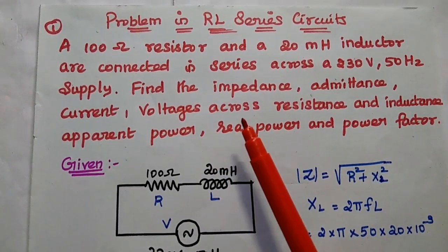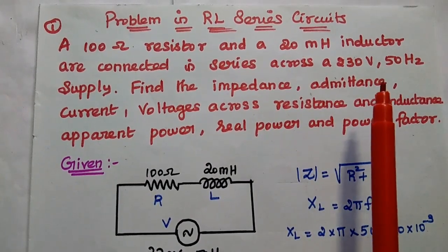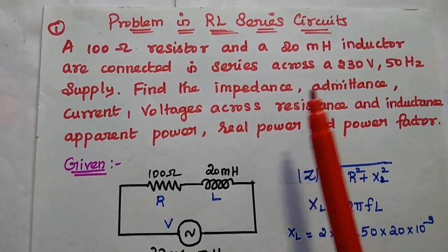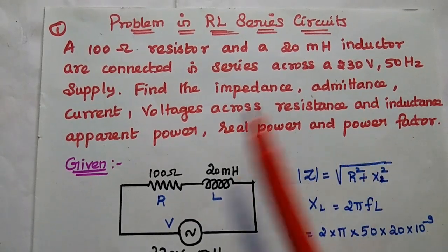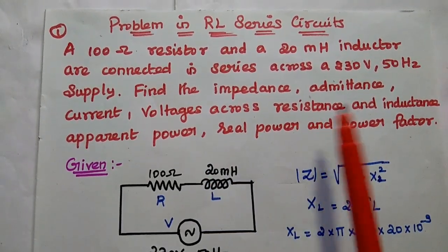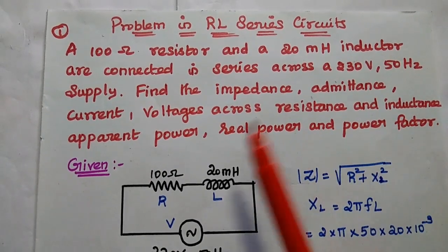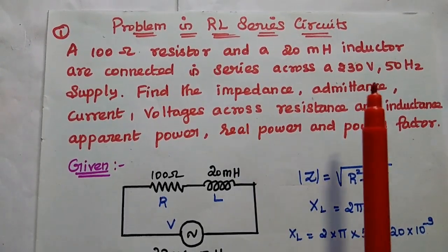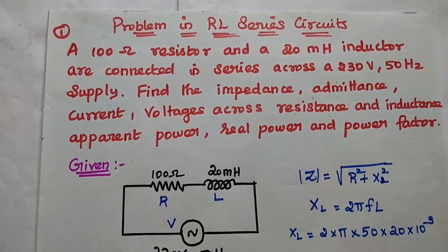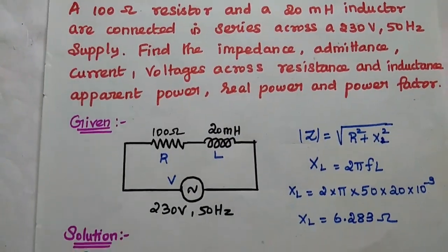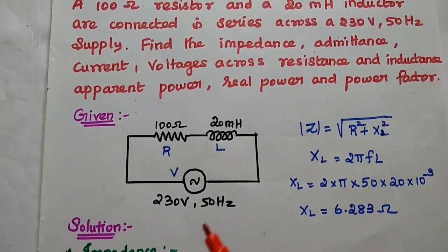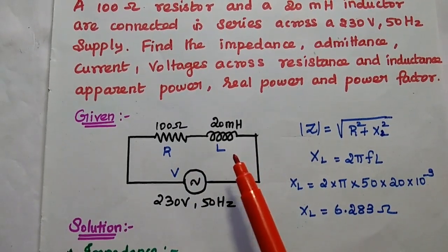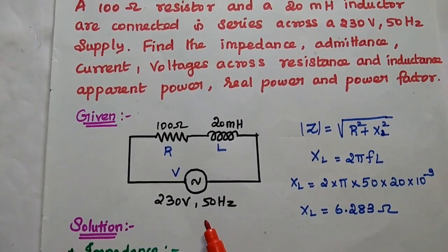A 100 ohm resistor and a 20 mH inductor are connected in series across a 230 volt 50 hertz supply. Find the impedance, admittance, current, voltage across the resistance and the voltage across the inductance, apparent power, real power, and power factor. In this problem, the resistor and inductor are both connected in series. In the first step, we are going to draw the circuit for RL series with the given values: R is 100 ohm, L is 20 mH, with the voltage 230 volt 50 hertz.